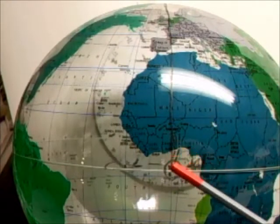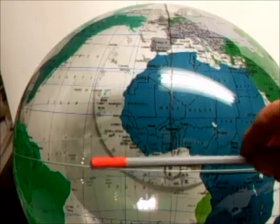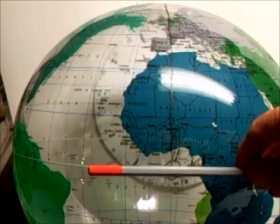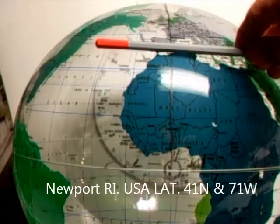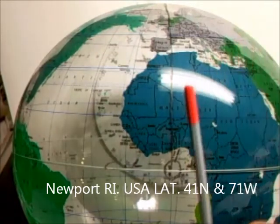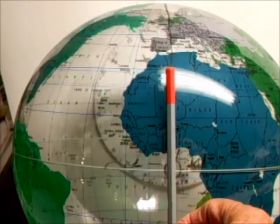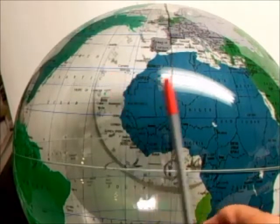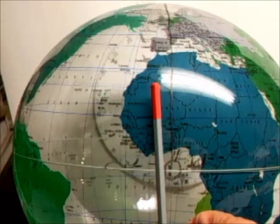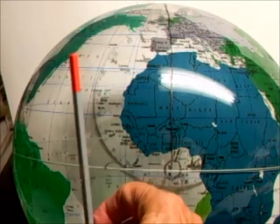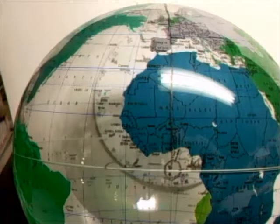So we can describe a place on this Earth by saying latitude, and let's say Newport, Rhode Island, latitude 41, and a longitude. Well, the longitude runs to the Western Hemisphere through 180, as well as 180 through the Eastern. So Newport, Rhode Island is at 71 west. So let me move the globe around.